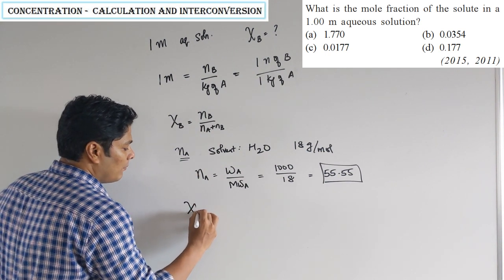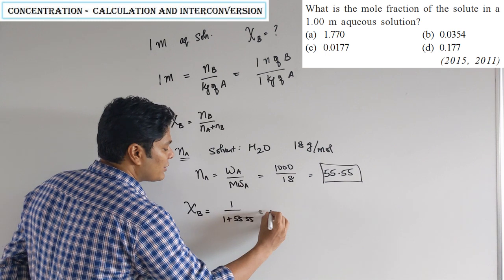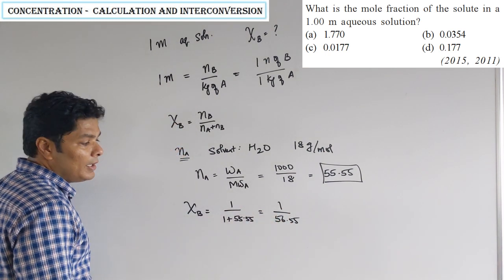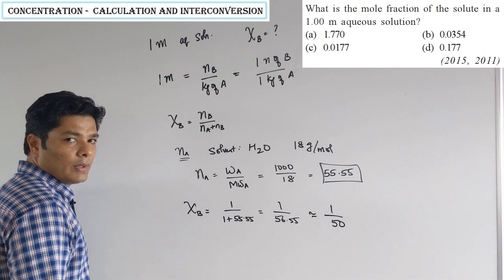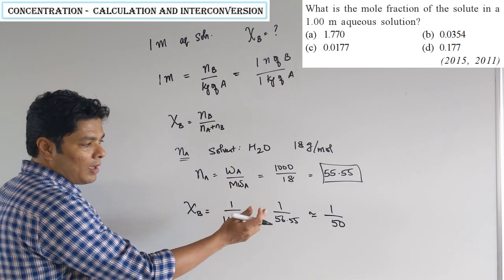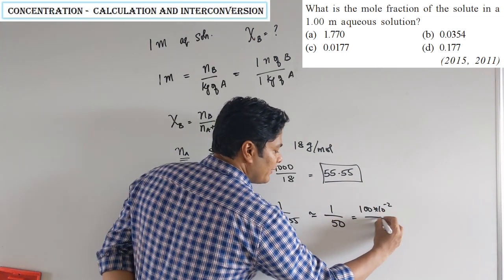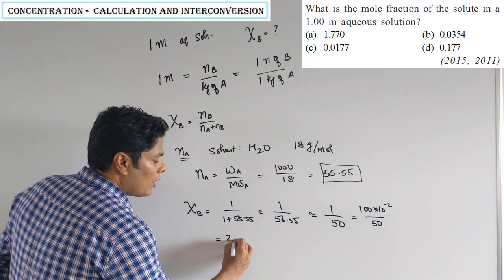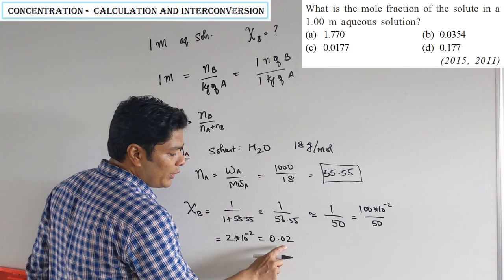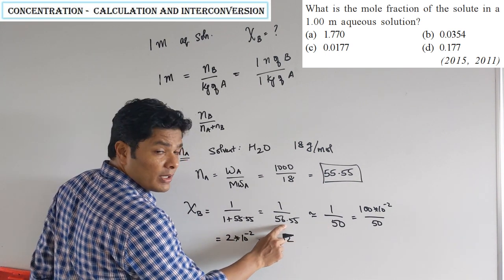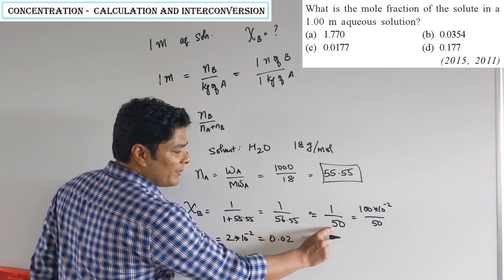Chi B equals moles of B (which is 1) divided by 1 plus 55.55, giving 1/56.55. Approximately this is 1/50, which equals 2 × 10⁻², or 0.02. Since I divided by a number approximately 10 percent smaller than the actual 56.55, the result is slightly inflated. So the true answer is about 10 percent less — approximately 0.018.